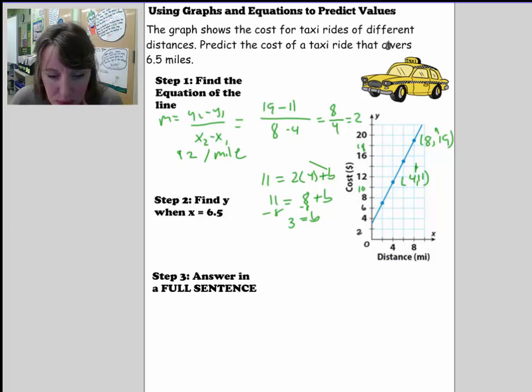That looks about right because it looks like it's halfway between the 2 mark and the 4 mark. So b is equal to 3. That's pretty consistent with what the graph shows us. So our equation is y is equal to $2 per mile plus an initial fee of $3.